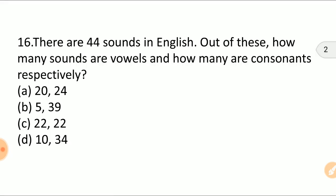So let's start with the first question. There are 44 sounds in English. Out of these, how many sounds are vowels and how many are consonants respectively? A: 20, 24. B: 5, 39. C: 22 and 22. D: 10, 34. The right answer is A, it is 20 and 24. There are 44 sounds in English and 5 vowels have 20 different sounds and consonant has 24 sounds. Please remember.